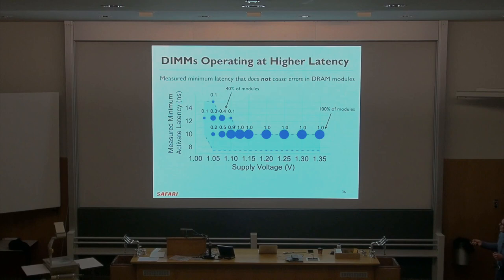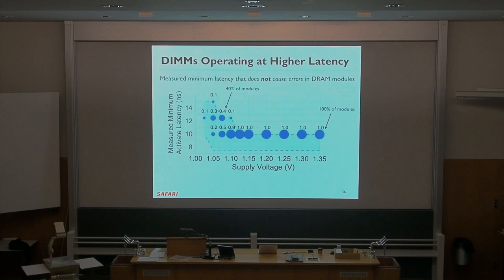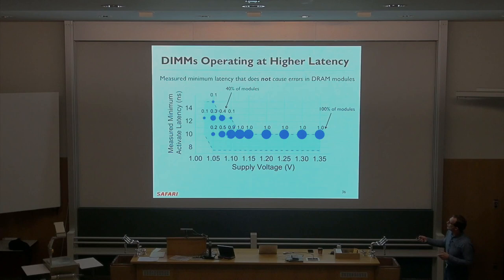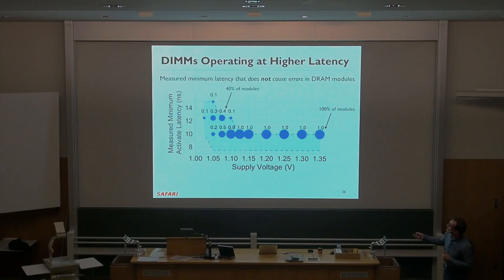For one manufacturer, the measured minimum activate latency: at 1.35V, 100% of modules operate correctly with an activation latency of 10ns, and that remains true until about 1.10V. At 1.10V, some modules start failing — many still operate correctly at 10ns, but some need 12.5ns. If you push voltage to 1.05V, only 20% of modules operate correctly at 10ns, 30% at 12.5ns, and you need to go up to 16ns for another 10% of modules. The remaining modules fail — they don't operate correctly even with higher latencies.